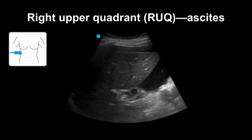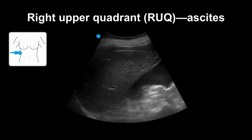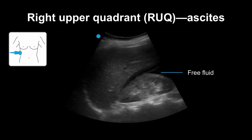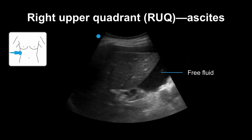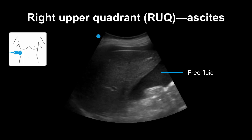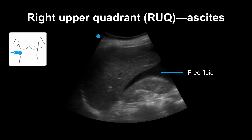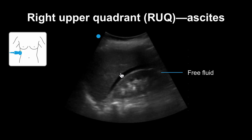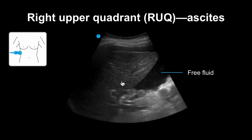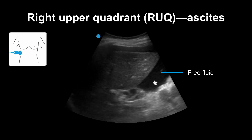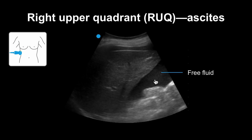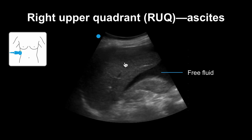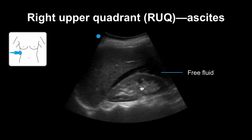It is a potential space called Morrison's pouch. And this is what ascites looks like on ultrasound in this view. You can see the black area on the ultrasound — free flowing, not contained by any borders — filling the potential space between the liver and the kidney.